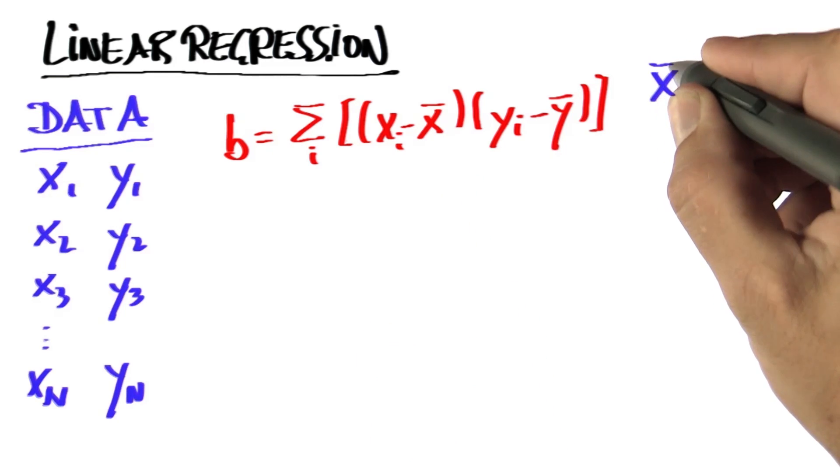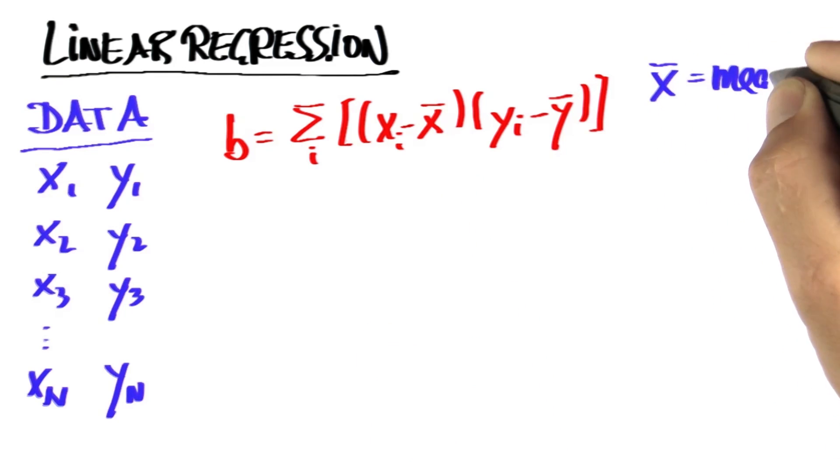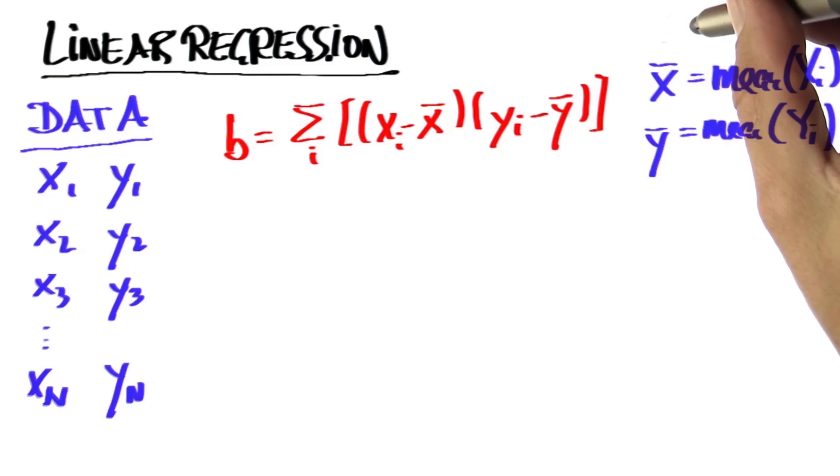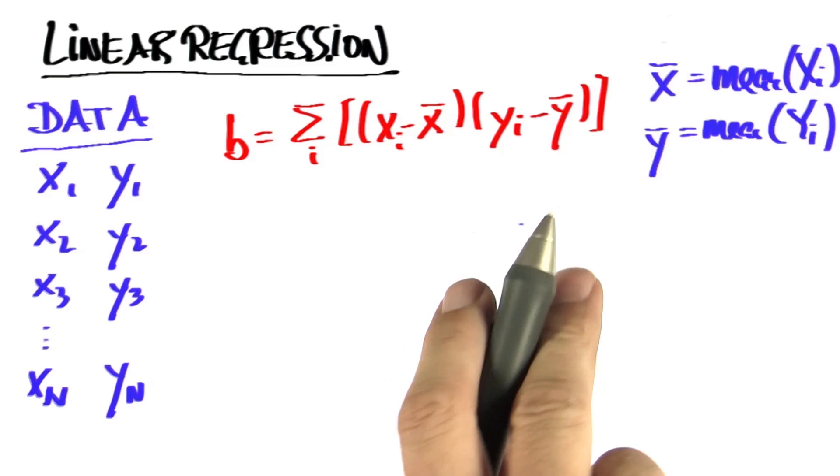So important here, in this notation, x bar is the mean of the xi's, and y bar is the mean of the yi's. Previously, we would have called x bar mu, but now that we have two variables, you're going to use the bar notation.